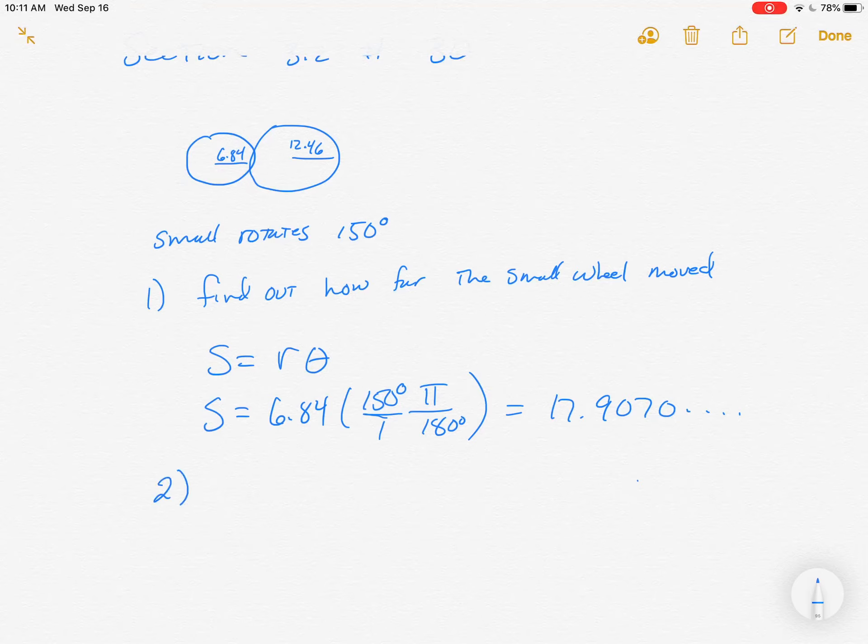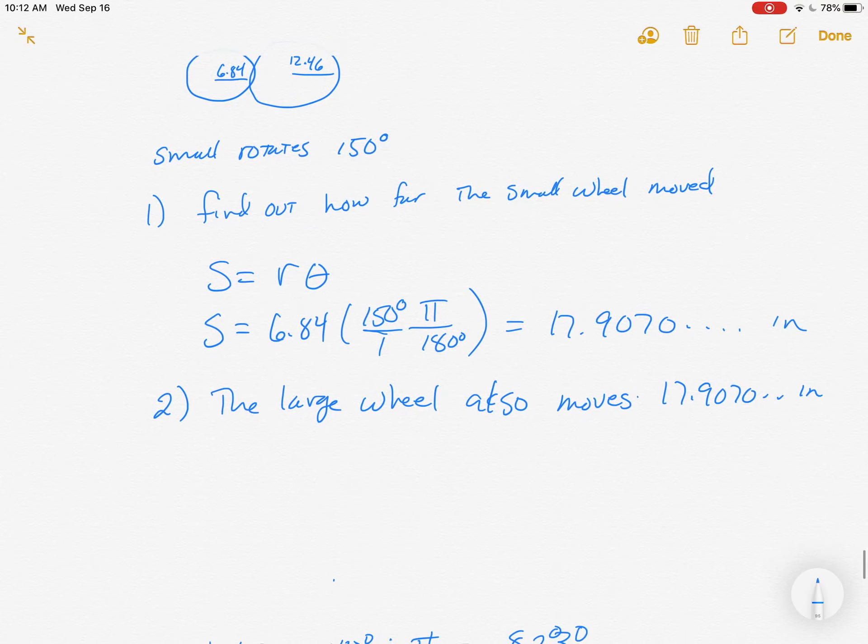Second step then is to know what just happened. If the small wheel just moves 17.9 inches, then so did the large one. So the large wheel also moves 17.9070 inches. They can't move different, right? And so we're going to use that to find the angle.